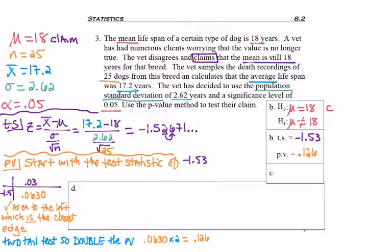Now I need to decide whether I will reject or fail to reject H0. If the P value is less than alpha, reject H0. My P value is 0.126. We already mentioned that alpha is 0.05.